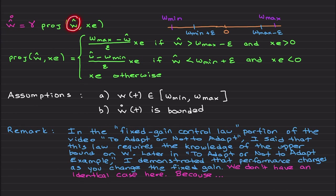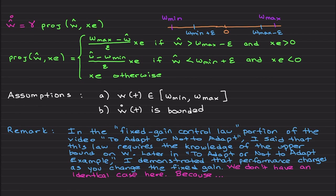More clearly, here is the definition. First, let's say you have w_min and w_max such that your actual time-varying uncertainty lives over this domain. w_max is a conservative upper bound on this uncertainty, and here is the lower bound. The projection operator works as follows: if ŵ is greater than w_max minus ε — where ε is the projection tolerance — and if x·e is greater than zero...